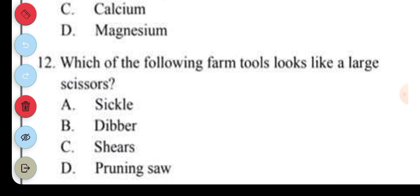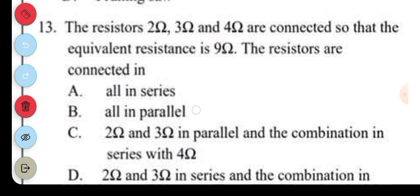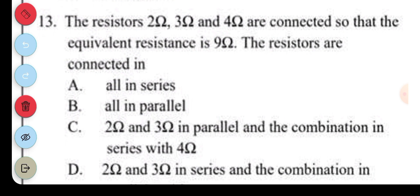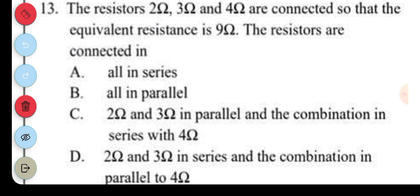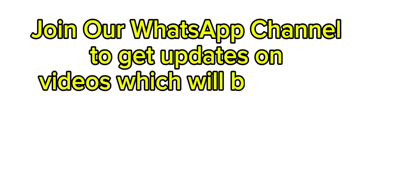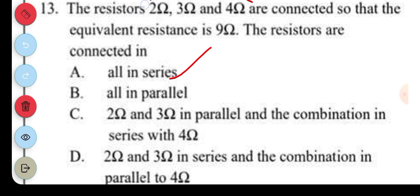Question 12. Which of the following farm tools looks like a large scissors? A. Sickle. B. Dibber. C. Shears. D. Pruning saw. The answer to question 12 is C, shears. Question 13. The resistors 2 ohm, 3 ohm, and 4 ohm are connected so that the equivalent resistance is 9 ohms. The resistors are connected in: A. Series. B. All in parallel. C. 2 ohms and 3 ohms in parallel and the combination in series with 4 ohms. D. 2 ohms and 3 ohms in series and the combination in parallel to 4 ohms. The answer to question 13 is A, they are all connected in series. That's why you add everything to get your 9.